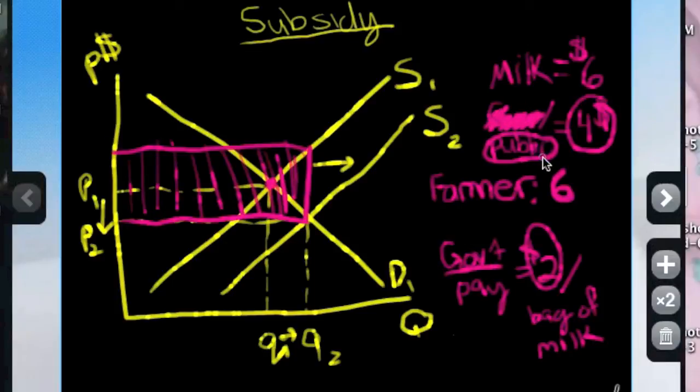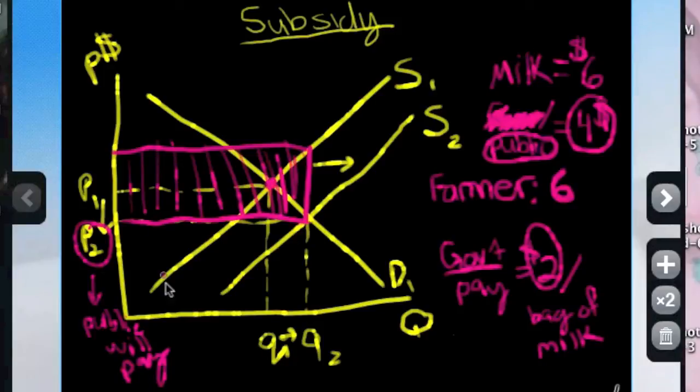So the public, like your average consumer, wants it to be $4. So they're only going to pay $4, which is this price right down here, P2. This is what the public will pay. And this subsidy, the $2, that's going to come from taxpayers.